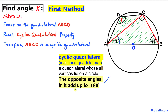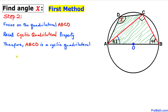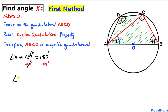Moreover, opposite angles in a cyclic quadrilateral add up to 180 degrees. Angle X and the 49-degree angle are opposite angles, so angle X plus 49 degrees equals 180 degrees. Subtracting 49 degrees from both sides, angle X turns out to be 131 degrees.